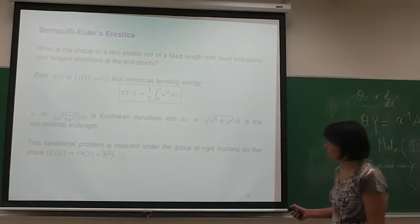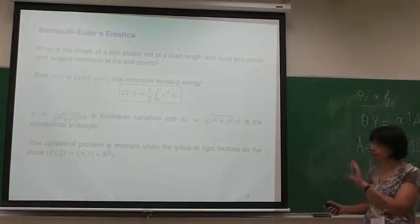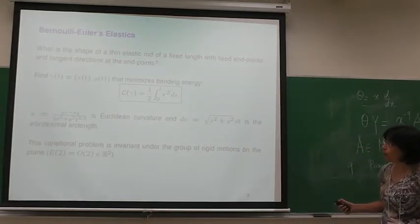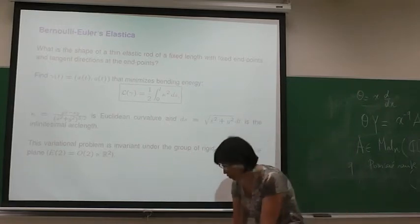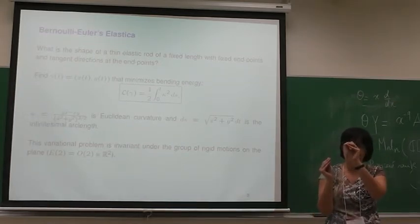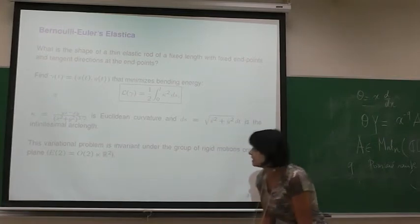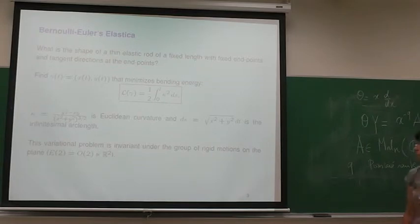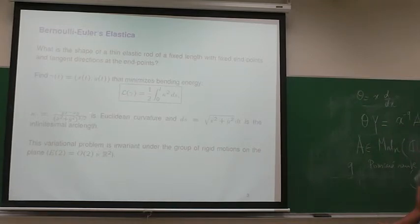What was discovered by Bernoulli is that the shape — the curve x(t), y(t), considered on the plane — would be such that it minimizes bending energy. Another feature of this problem is that it is invariant with respect to rigid motion. If I apply rigid motion to my boundary condition, then the solution of the new problem is just the same rigid motion applied to the solution of my previous problem. This is manifested in that it is written with respect to Euclidean invariants: curvature is invariant with respect to rigid motions, and arc length is invariant with respect to rigid motions.